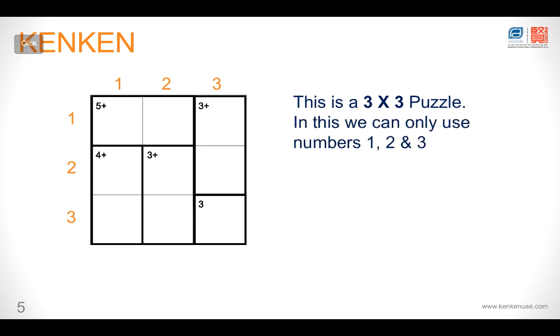This brings us to the first rule of KenKen Puzzles. The first rule stipulates that if it's a 3x3 KenKen Puzzle, the only numbers that we can use to fill out the boxes are 1, 2 and 3. Similarly, if it's a 4x4 KenKen Puzzle, we can use the numbers 1, 2, 3 and 4. 5x5, we can use the numbers 1, 2, 3, 4 and 5. So on and so forth.